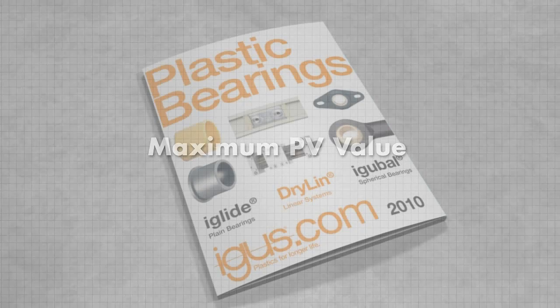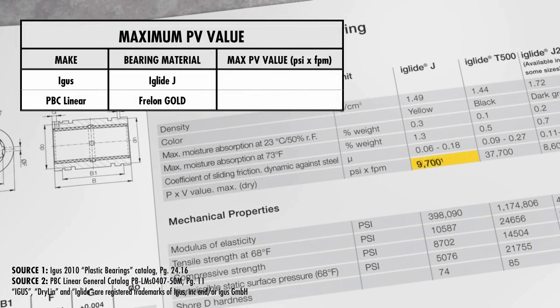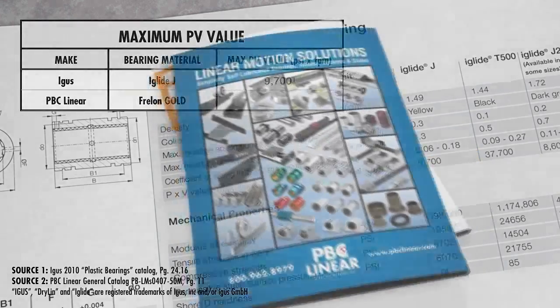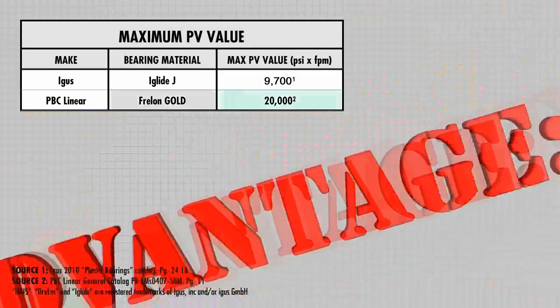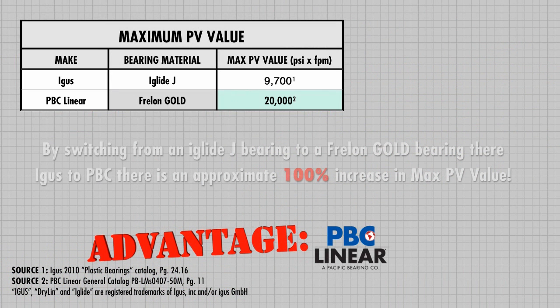The third part of the PV formula is the maximum dynamic capacity of the bearings, referred to as maximum PV value. This value is not calculated — it is given in the manufacturer's catalog and is specific to the bearing material. Looking up the iglide J maximum PV value in the igus catalog, the iglide J bearing material has a maximum PV of 9,700 psi times feet per minute. The Freeland Gold maximum PV value in the PBC linear catalog is 20,000 psi times feet per minute.